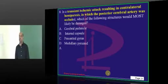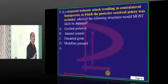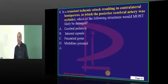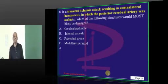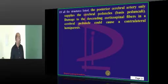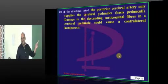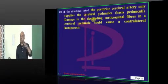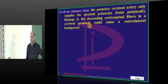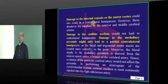Generally, middle cerebral artery makes us think of hemiparesis. But can posterior cerebral artery also lead to development of hemiparesis? Very much — you should remember that the posterior cerebral artery supplies the cerebral peduncles. Any damage to the descending corticospinal fibers at the cerebral peduncles can lead to the development of contralateral hemiparesis.